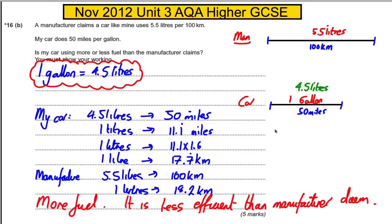If you keep your wits about you, this is just a ratio-type question. You just need to convert miles to kilometers so everything is in kilometers, and convert everything to liters as well. Once you do that, everything is very straightforward.